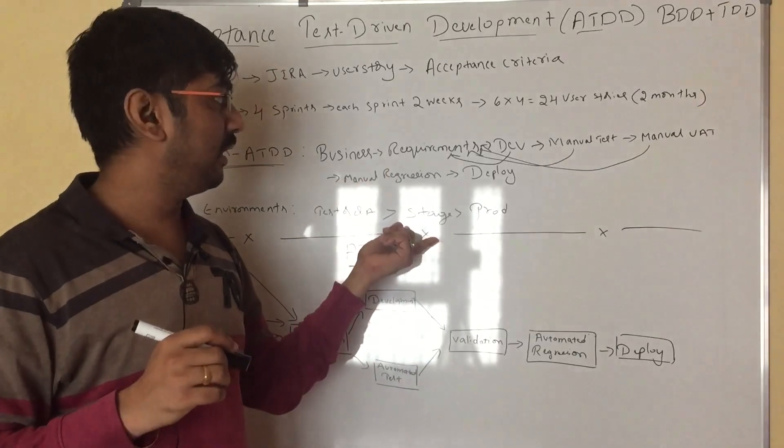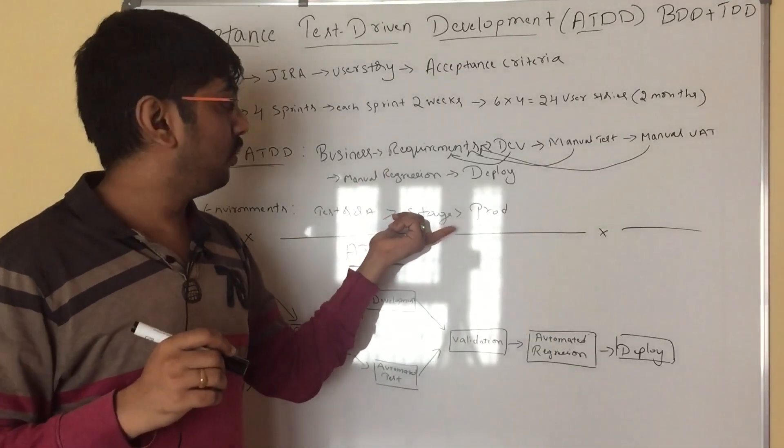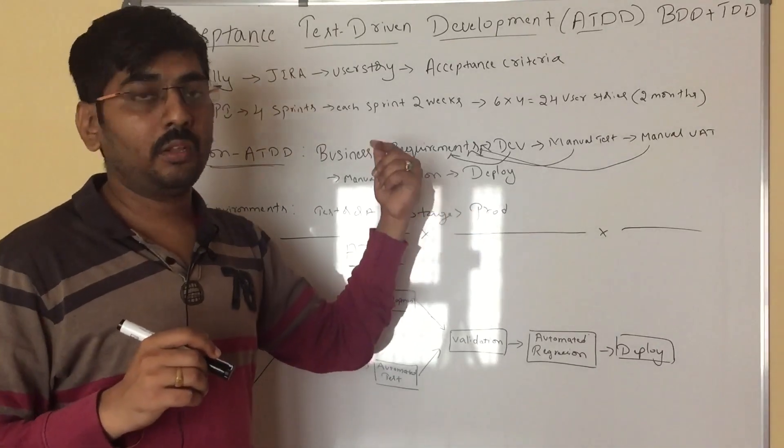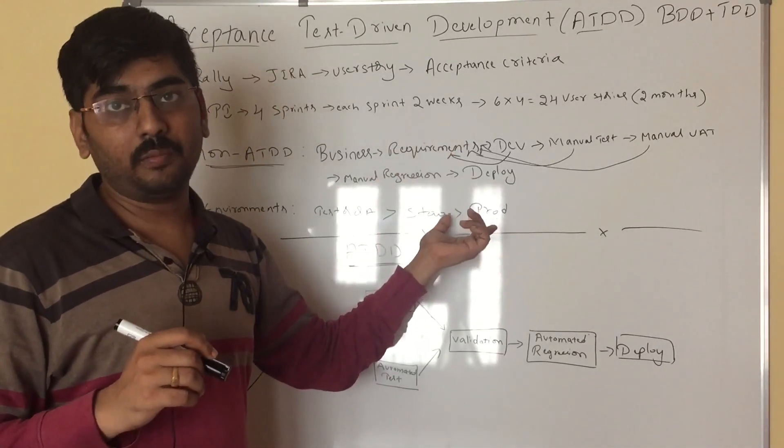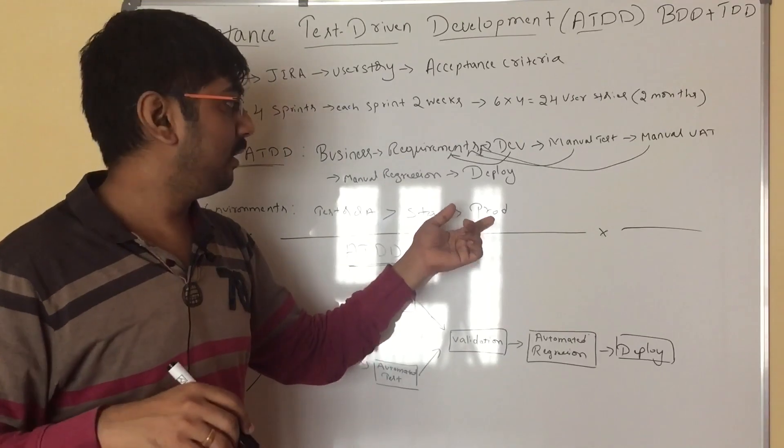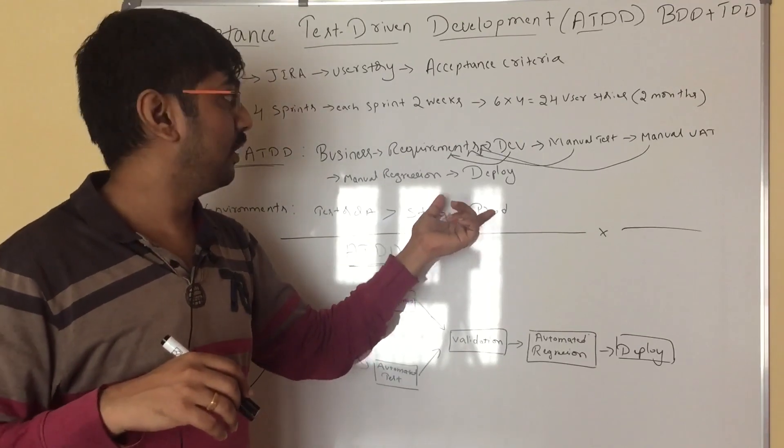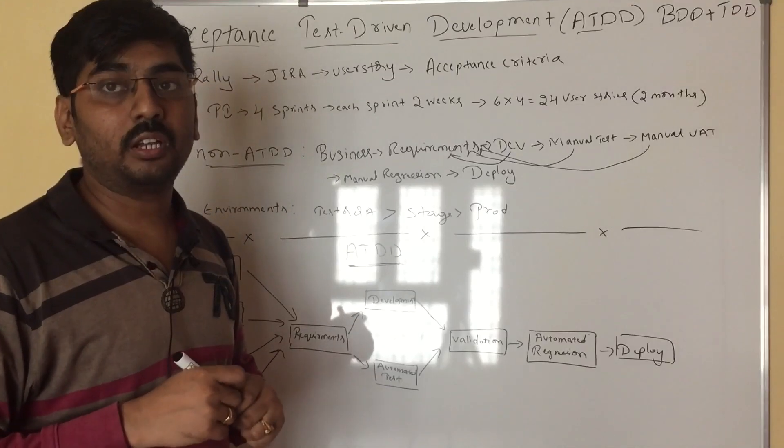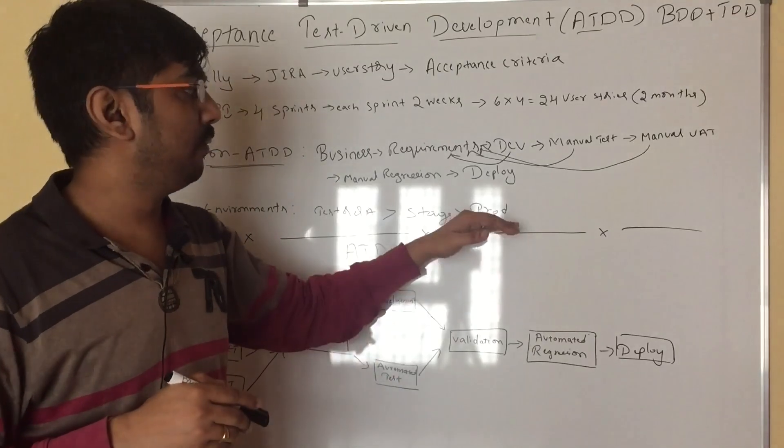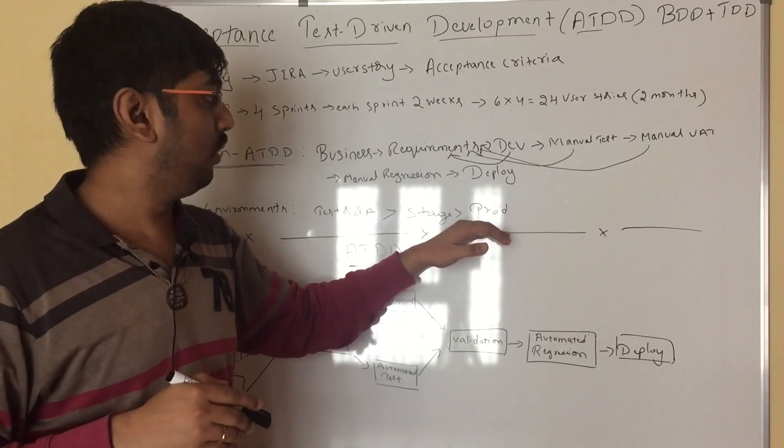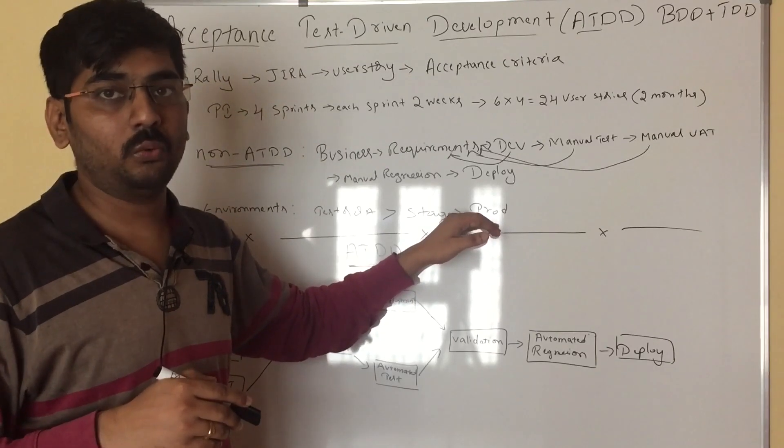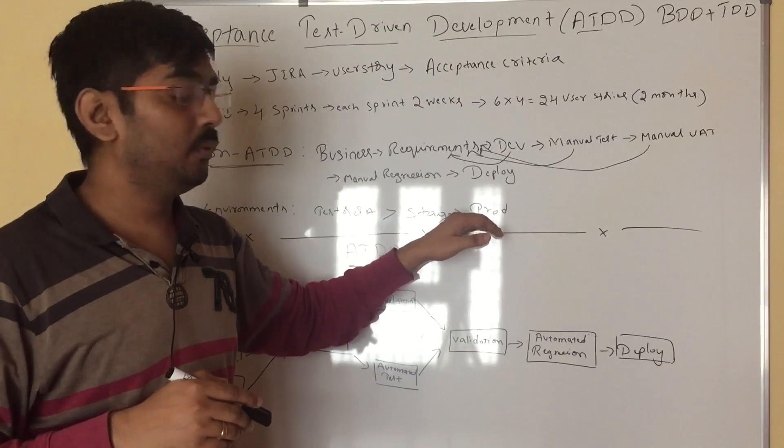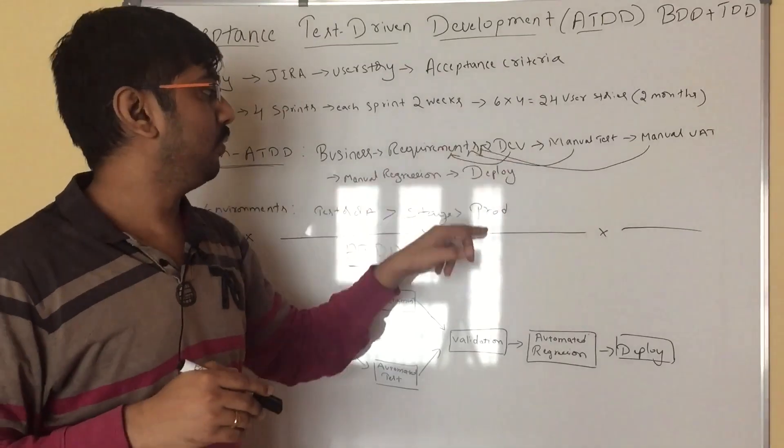After that final prod also, after deployment, we need to check your user stories in prod. Are they working correctly or not? You need to give a sign off on prod. There will be a release call. In that call, once the production is done, in the same call, you will be testing these 24 user stories.